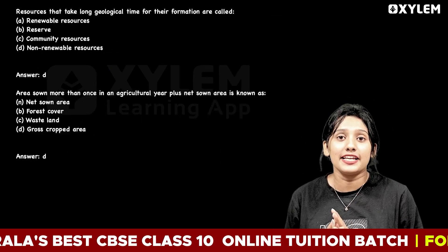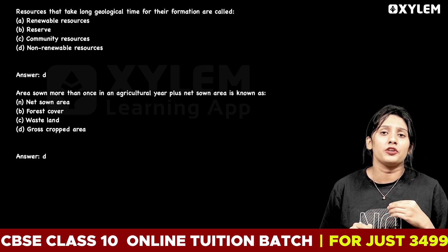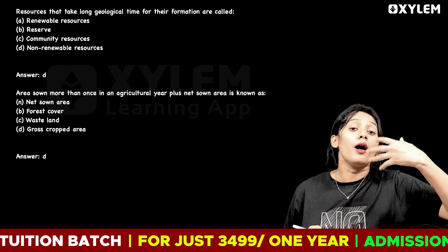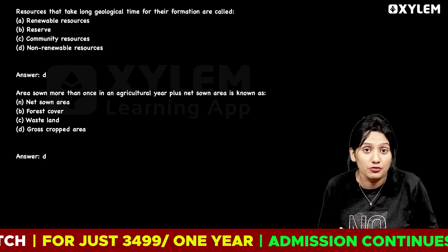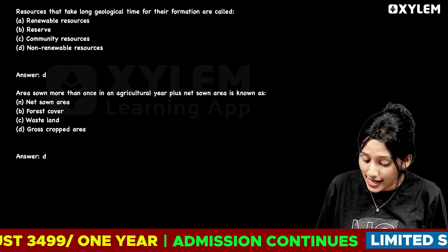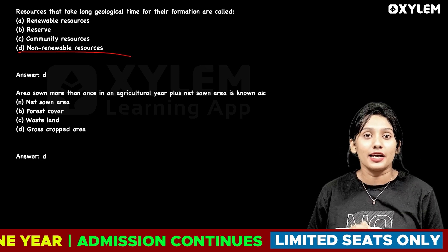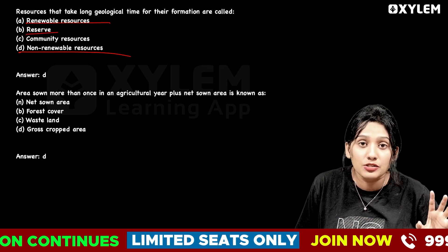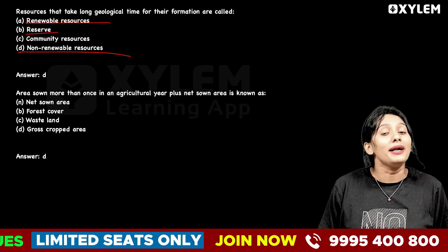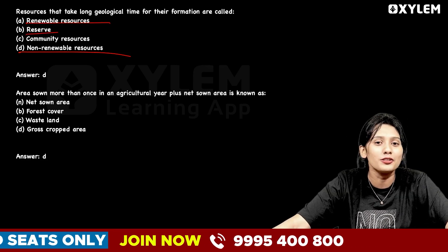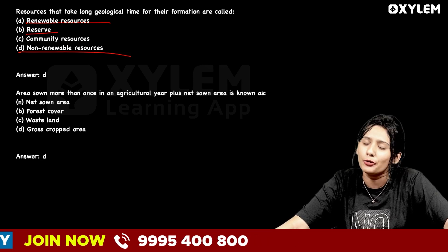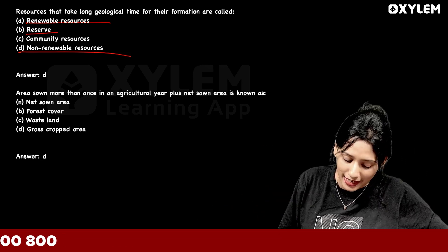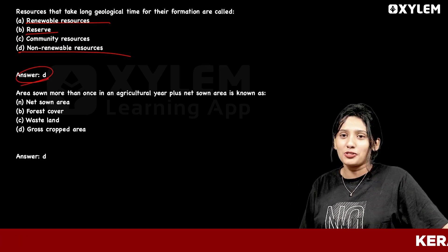Moving on to the next question: resources that take long geological time for their formation are called what type of resource? Non-renewable resources. Renewable resource is not correct, reserved resource is not correct, community resource is not correct. The correct answer is Option D — non-renewable resources.